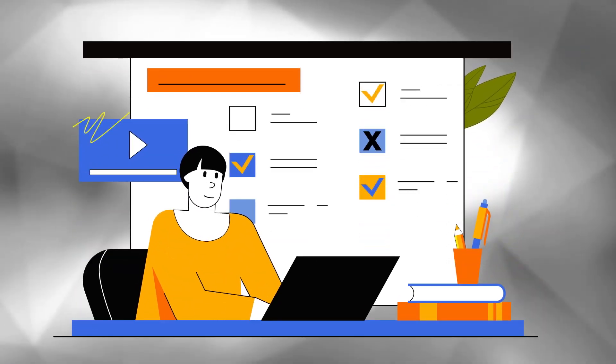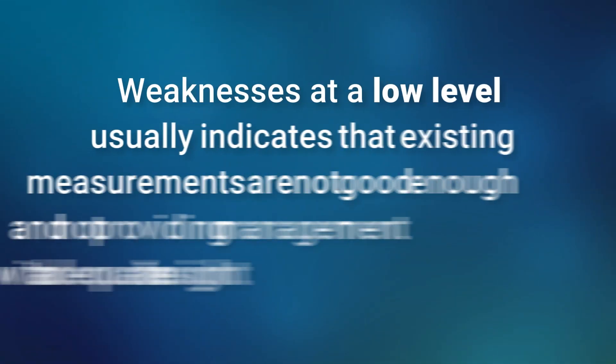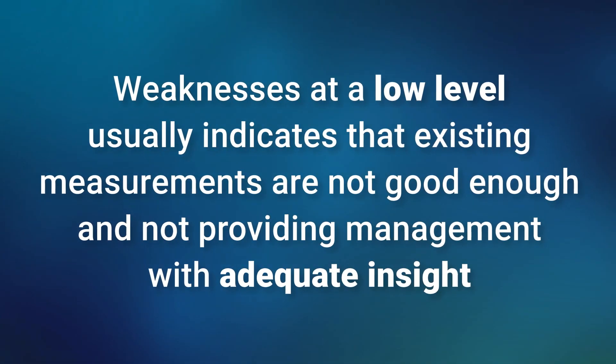A related circumstance is when the organization's business objectives and the related measures are defined at too high of a level. This may make it appear as though the organization is always achieving its goals. This is often reflected when items related to objectives and measures are checked off without any clear action or results. This may also mask underlying inefficiencies or ineffective behaviors. This is usually realized when there are weaknesses at a lower level, which generally indicates the existing measurements are not good enough and are not providing management with adequate insight into what is going on.